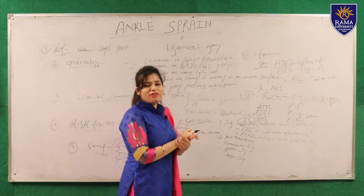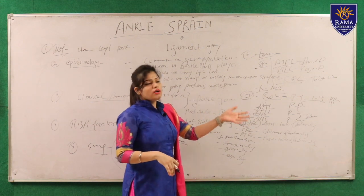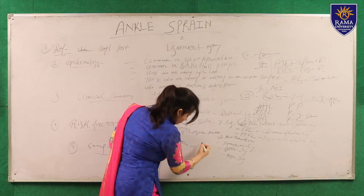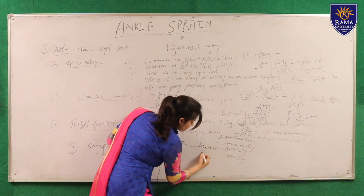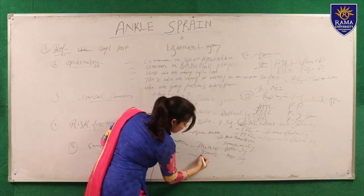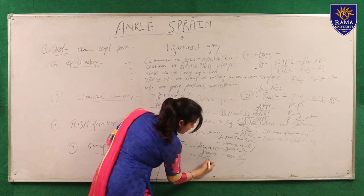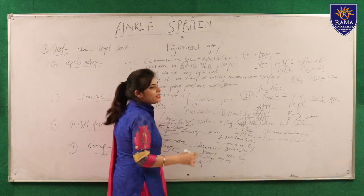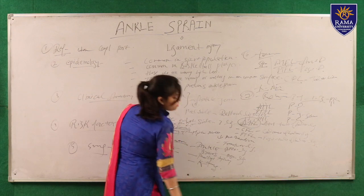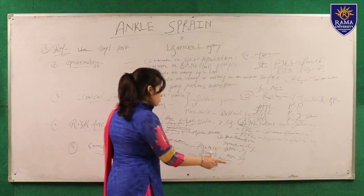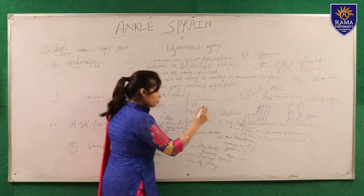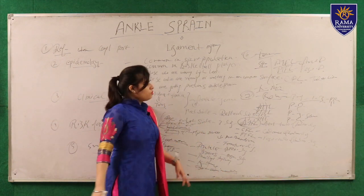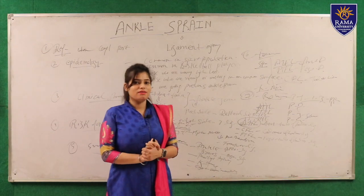Last but not least is prevention, which is very important. For prevention, we use ankle braces, Mulligan taping, and K-taping for athletes going onto the ground. We also recommend footwear modification. This concludes the overview of ankle sprain. Thank you so much.